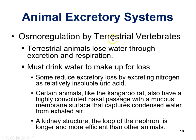Moving on to terrestrial vertebrates: terrestrial animals lose water through excretion and respiration and must drink water to make up for the loss. Some reduce excretory loss by excreting nitrogen as relatively insoluble uric acid — as we discussed with reptiles and birds. When excreting nitrogenous waste as uric acid, you don't need to excrete a lot of water, so you can survive in a hot, dry environment.